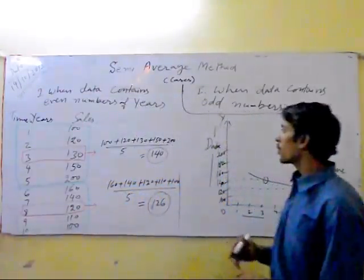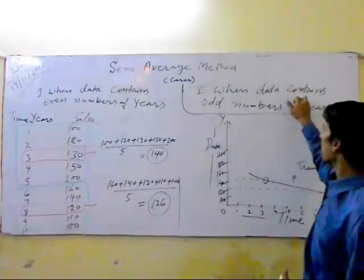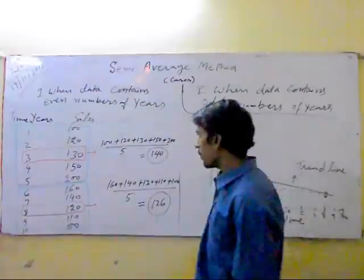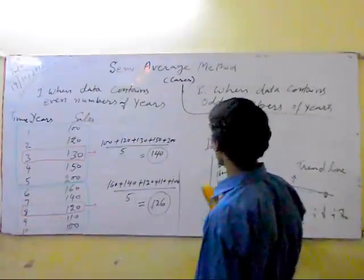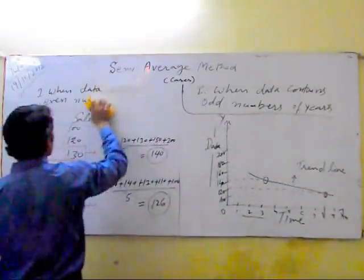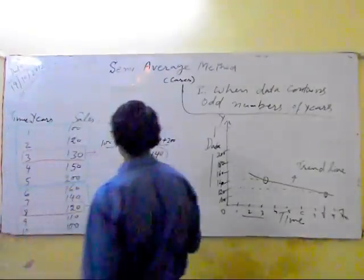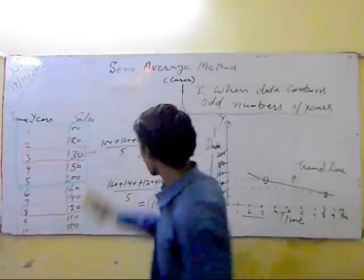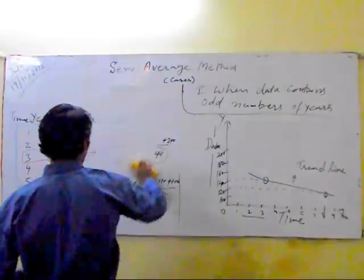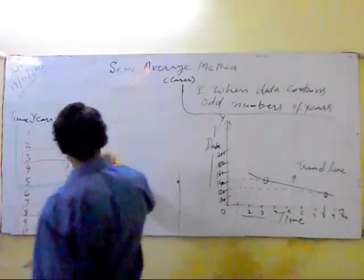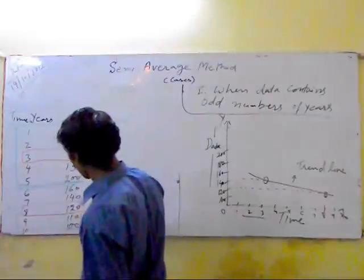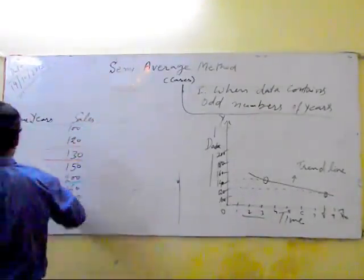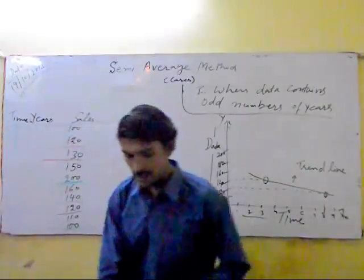Now we will explain when data contain odd number of years. At that time, suppose, just same data we are taking. Suppose instead of 10 years, suppose time is 11 years.